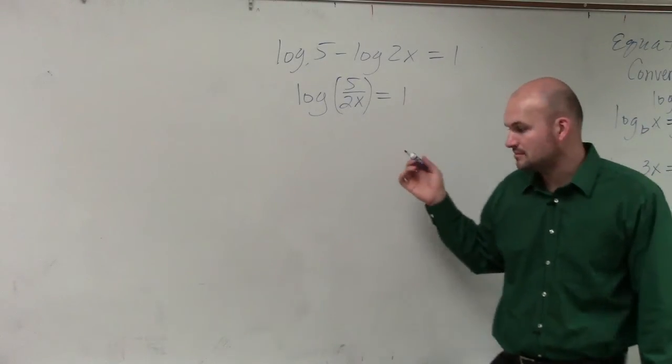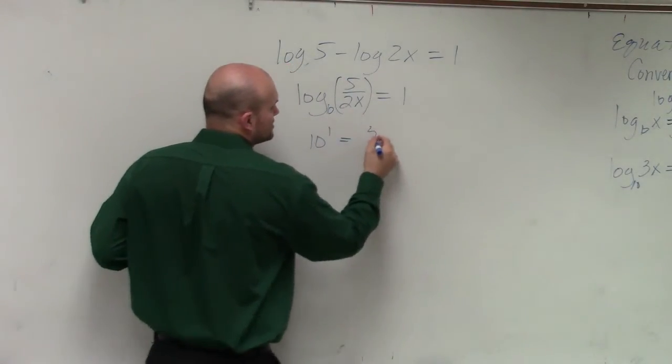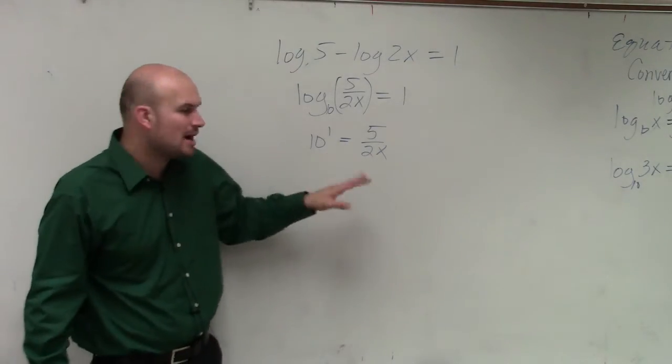What's the base again? 10, because it's not shown, so it's 10. So it's 10 to the first power equals 5 over 2x. Well, we know 10 to the first power is just 10.